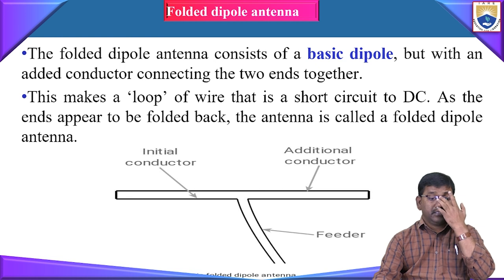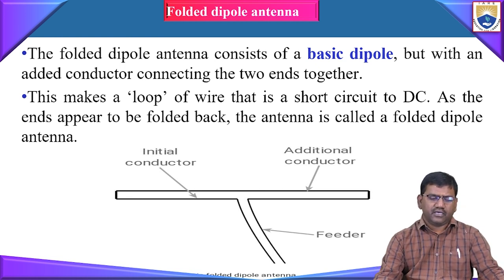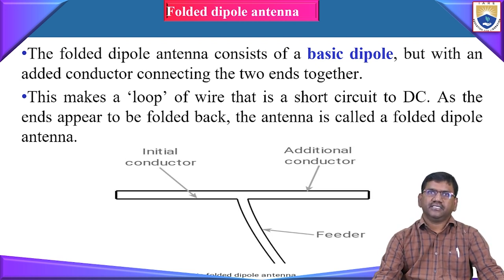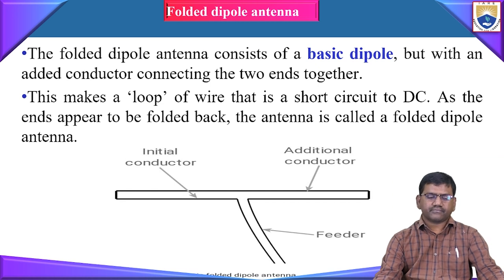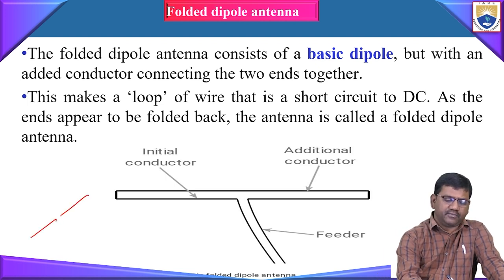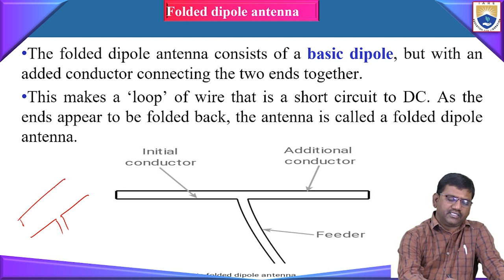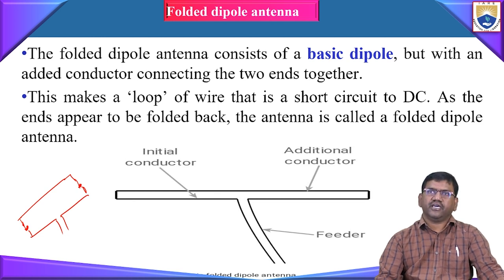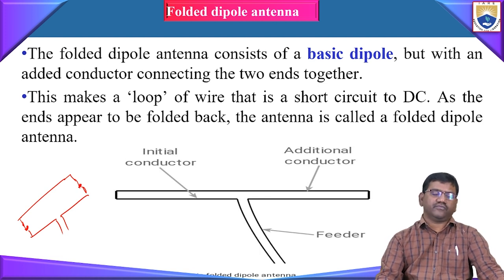The next antenna is the folded dipole antenna. It consists of a basic dipole with an added conductor connecting the two ends, forming a loop that is short-circuit to DC. As the ends appear to be folded back, the antenna is known as a folded dipole antenna. Like the basic dipole, the folded dipole is a balanced antenna and needs to be fed with a balanced feeder transmission line.